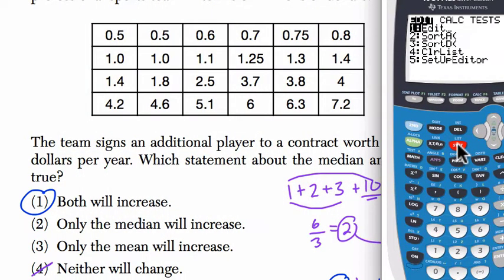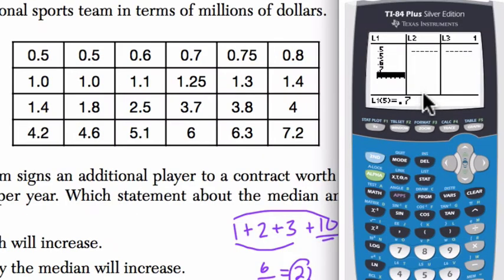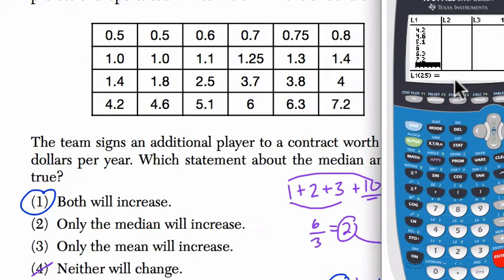Press the stat button. And now we're going to go to edit. We're going to clear up any old data. Scroll to the top, clear, enter. Scroll to the very tippy top, clear, enter. Now we have to enter in this data. Okay. Now I have all the numbers on the list.